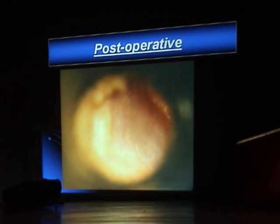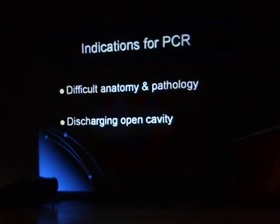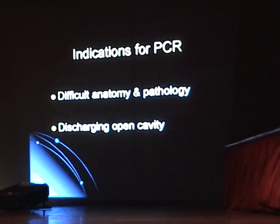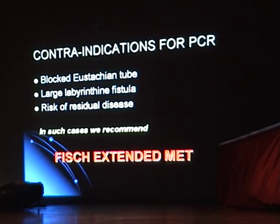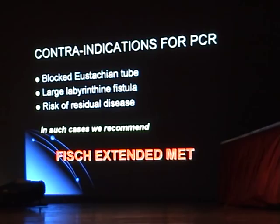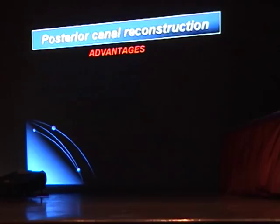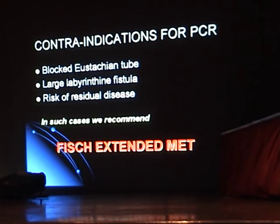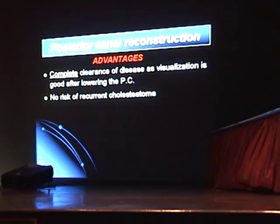Indications for posterior reconstruction: difficult anatomy and pathology, or a discharging open cavity. Contraindications: blocked Eustachian tube, large labyrinthine fistula — if a large labyrinthine fistula is present, removal risks deafness and must be done at a second stage. For risk of residual disease in such cases, an extended mastoid epitympanectomy is recommended. Advantages include complete clearance of disease, visualization after clearing, no risk of recurrent cholesteatoma, and aeration down the Eustachian tube so residual mucosa causes no problems.